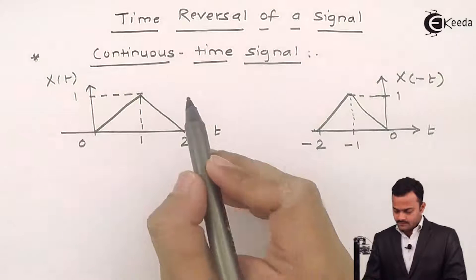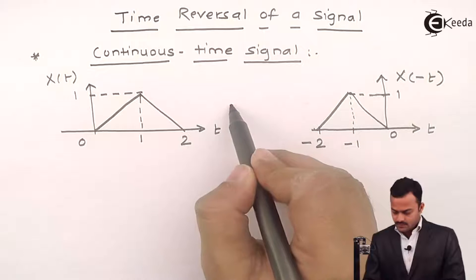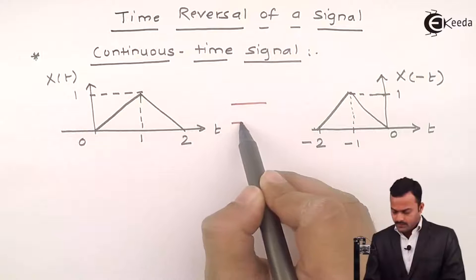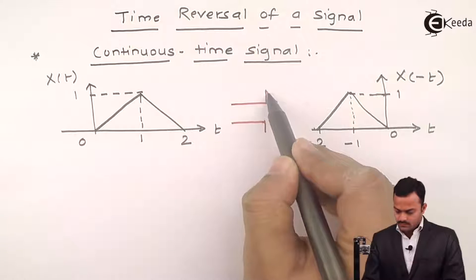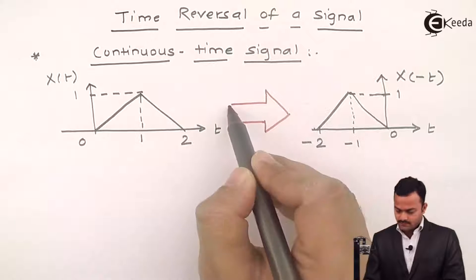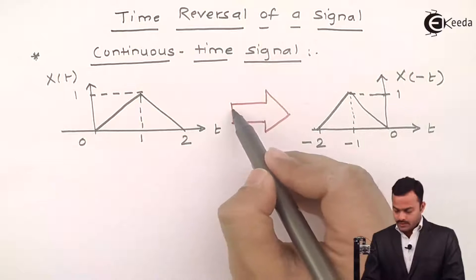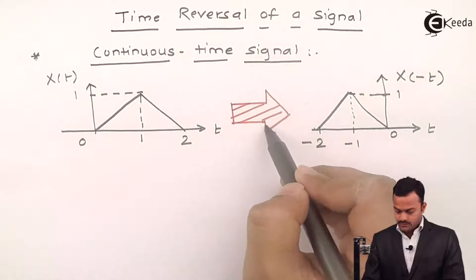So, what we have done over here? X of t, we have done a time reversal. So that, we got a new signal, which is mirror image of original signal.